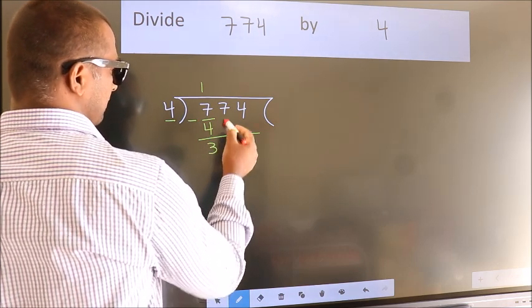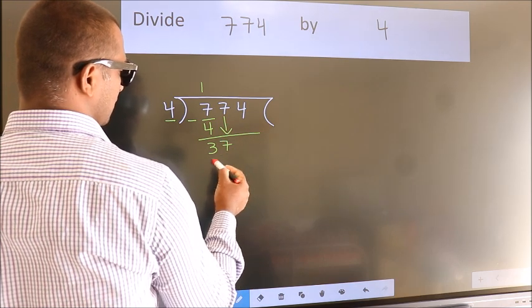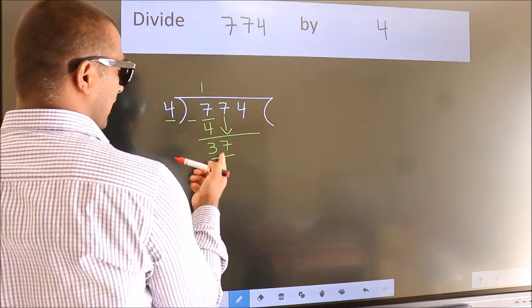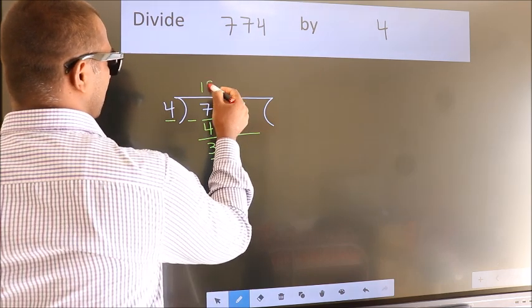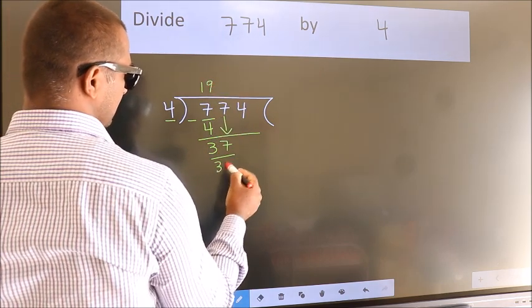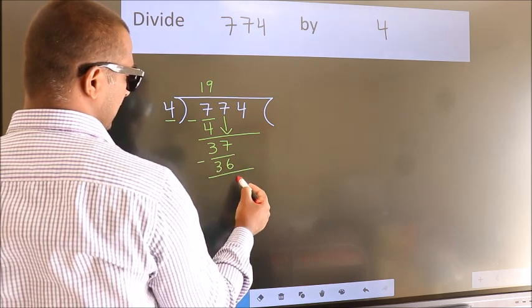After this, bring down the beside number. So 7 down, giving us 37. A number close to 37 in the 4 table is 4 nines, which is 36. Now we subtract and get 1.